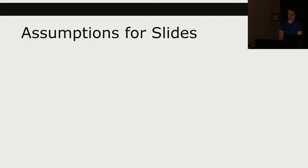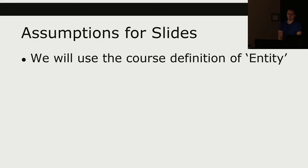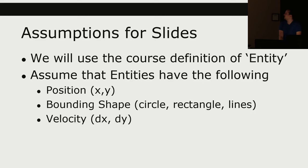Some assumptions for these slides: we'll be using the course definition of entity. We assume entities have the following properties: they have some position x, y; if they are moving around, they have some velocity — a delta x and delta y, just a change in x and y on every frame; and they're going to have some sort of bounding shape. For our course, we're dealing with circles in assignment two, and rectangles and lines for the rest of the course.